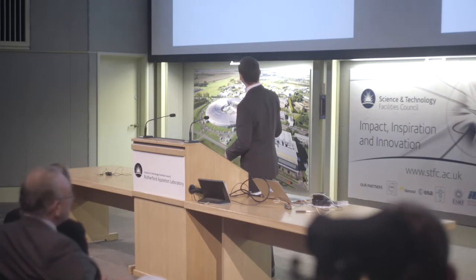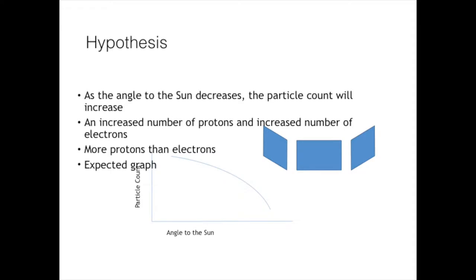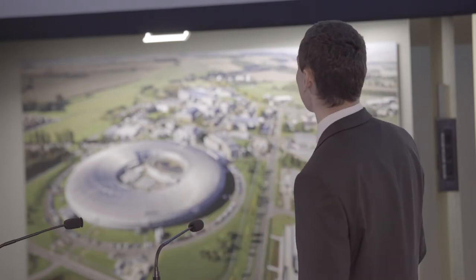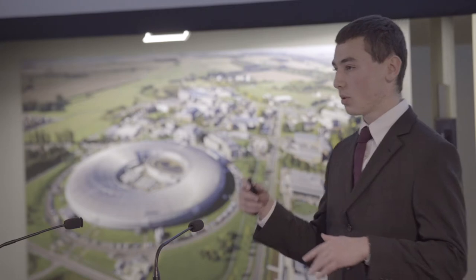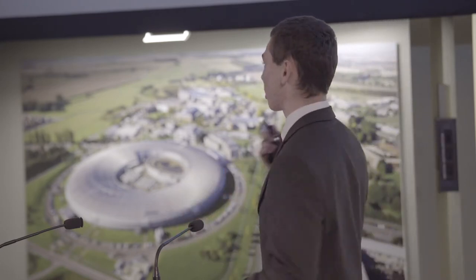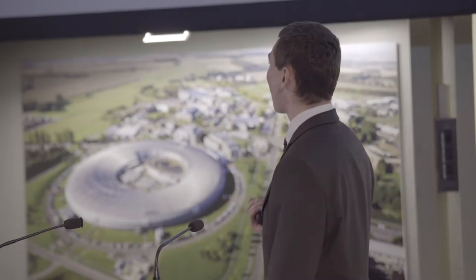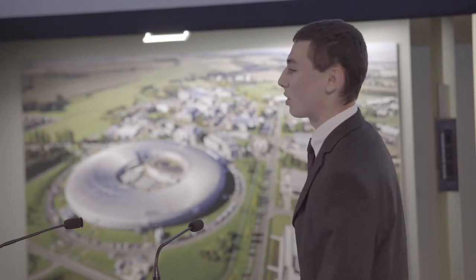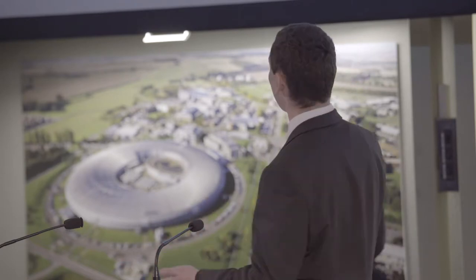This was the graph we expected to see: as the angle to the Sun decreases, we thought the particle count would increase, and as the angle increases, the particle count would decrease. We generated a very early graph with only a few data points, and looking at it by eye it looked exactly like this. We thought our hypothesis was exactly right and the whole experiment had been a complete success — all we had to do was get more data.